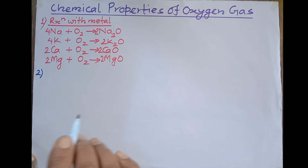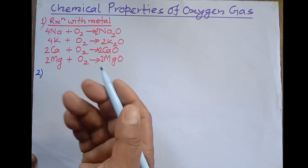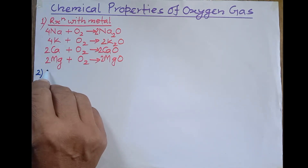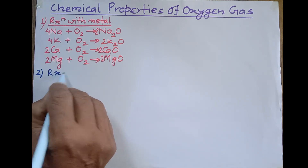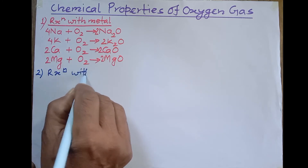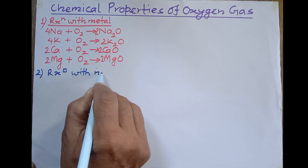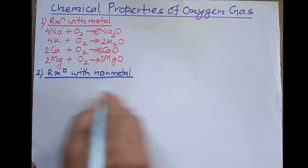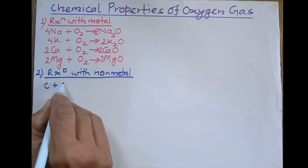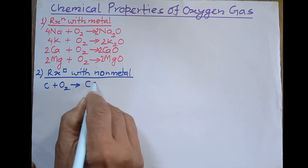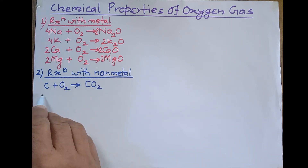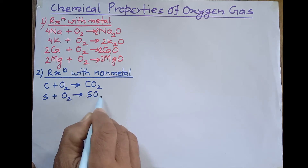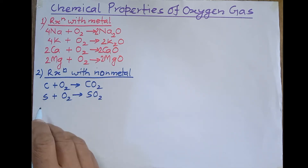Number two: non-metals like carbon, sulfur, phosphorus, etc., burn in air or in oxygen to form non-metallic oxides. This is remembered as the reaction with non-metals. If carbon burns in air, it forms carbon dioxide (CO₂). In the same way, if sulfur burns in air or in oxygen, it forms sulfur dioxide (SO₂).